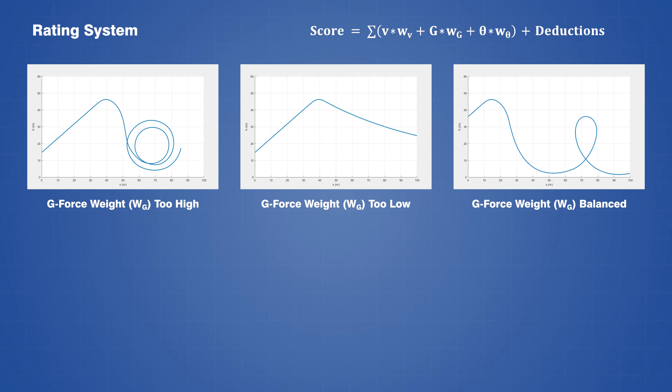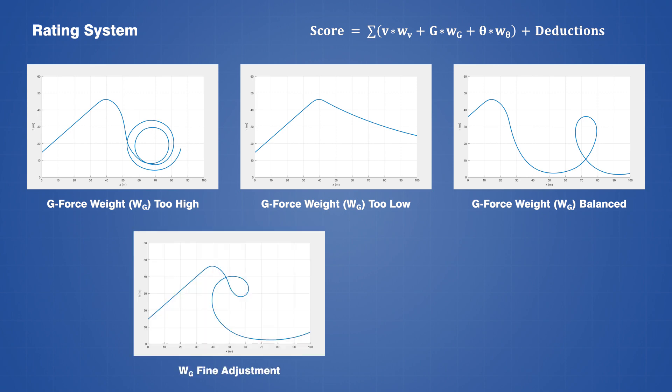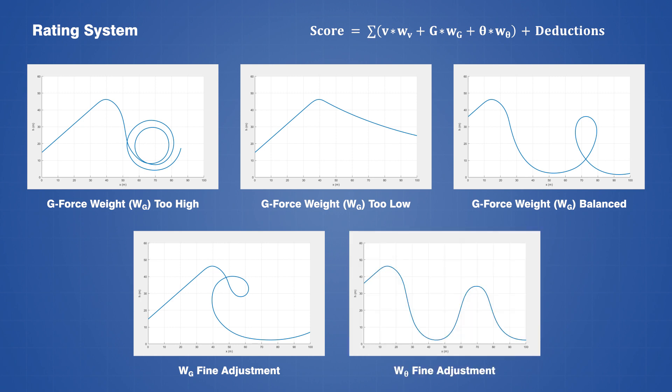For example, if we wanted to design a rollercoaster with more g-forces, then we can assign a slightly higher weight to the g-force parameter, or if we wanted to design steeper hills, then we can assign a slightly higher weight to the steepness parameter.